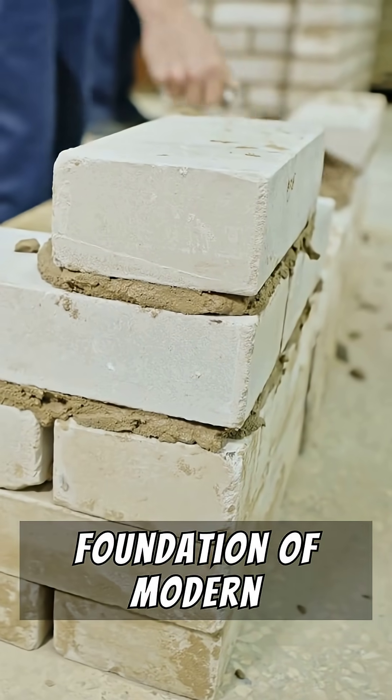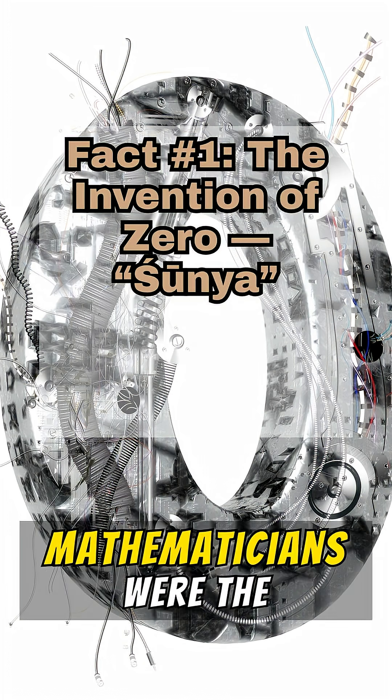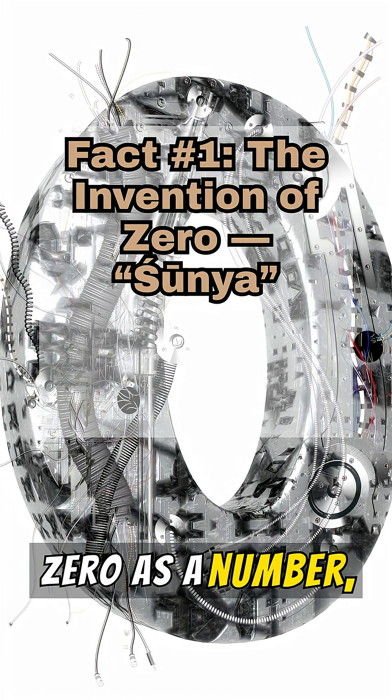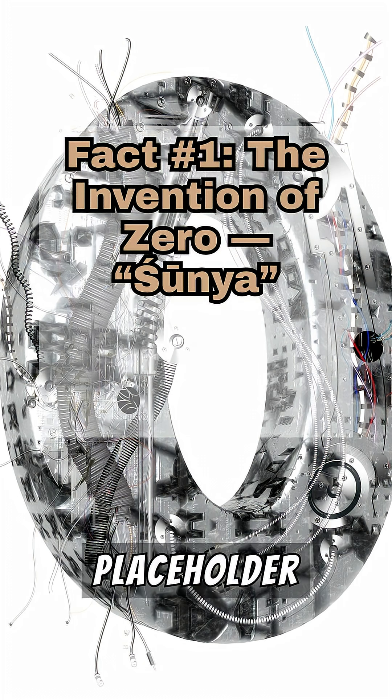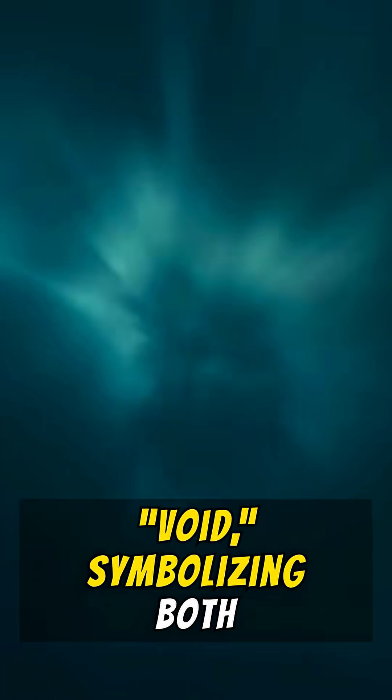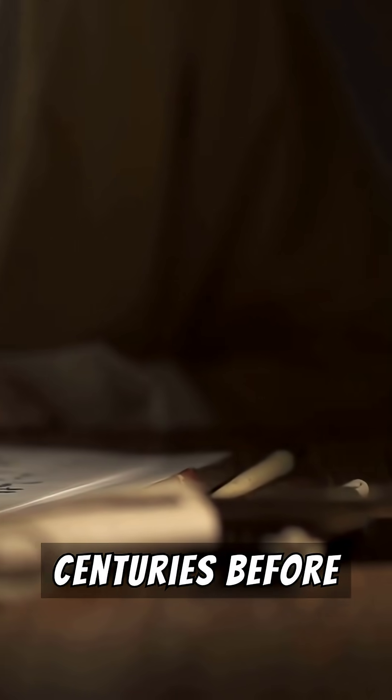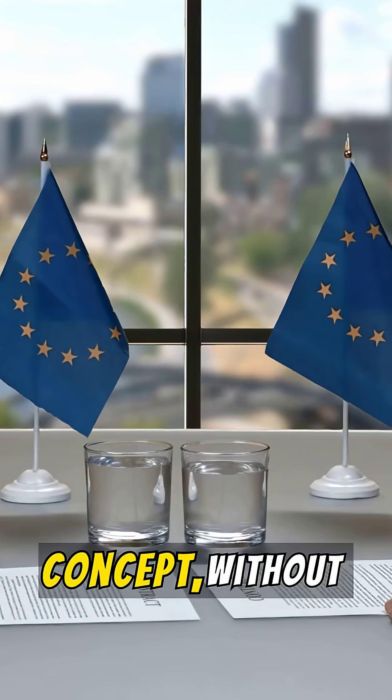Forming the foundation of modern mathematics, astronomy, and science, ancient Indian mathematicians were the first to treat zero as a number, not just a placeholder. The Sanskrit word shunya meant void, symbolizing both emptiness and infinite potential. Brahmagupta, in the 7th century, defined operations involving zero, centuries before Europe even had the concept.